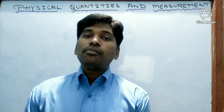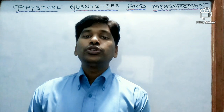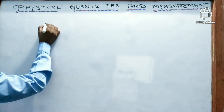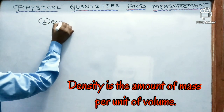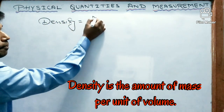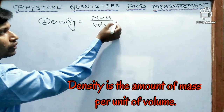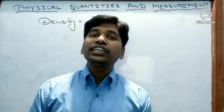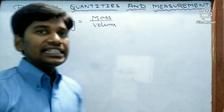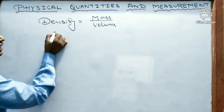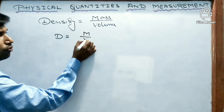Density of a body can be defined as the mass per unit volume. We can write this mathematically as density equals mass divided by volume, denoted as D equals mass by volume.